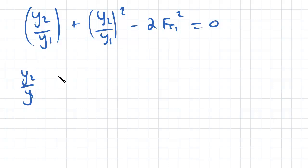So we've got y2 over y1 is equal to a half times minus 1 plus or minus the square root of 1 plus 8 times the Froude number squared, just using the quadratic formula.